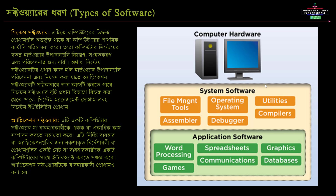System software includes the file management system, operating system, utilities, assembler, debugger, and compiler.